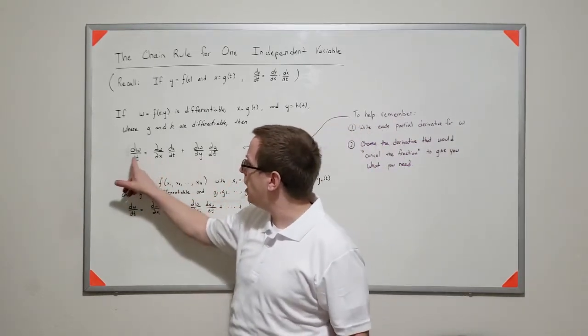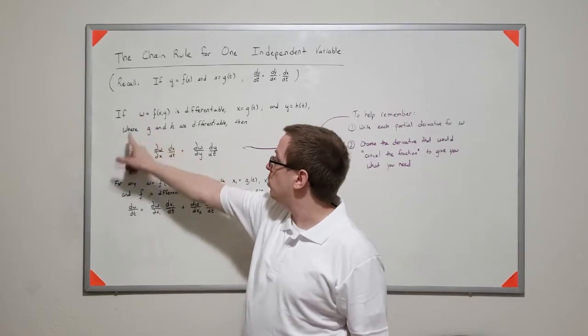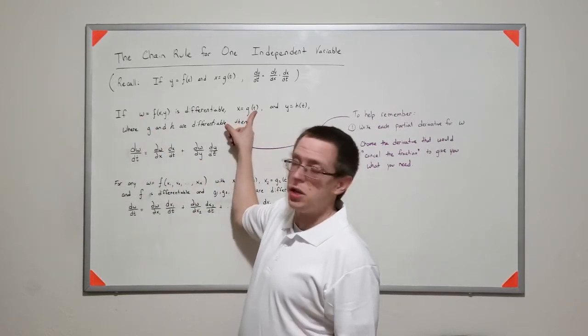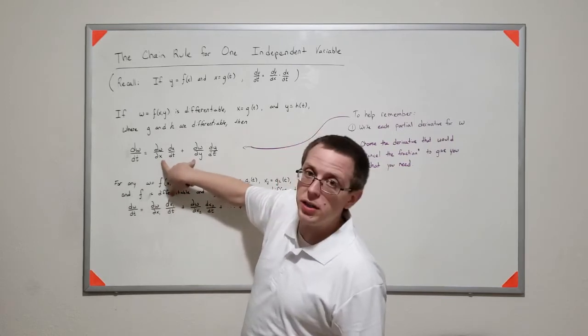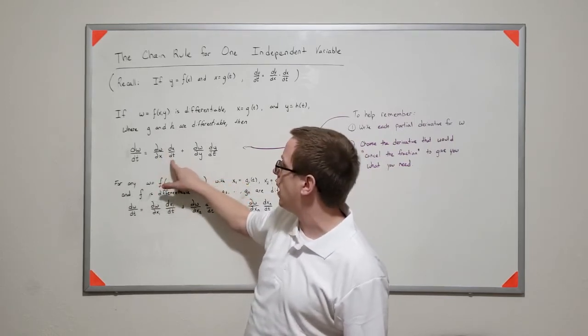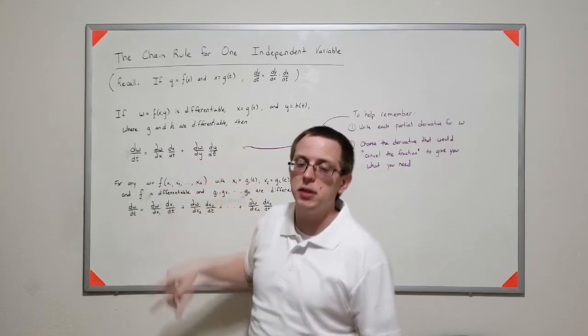Then we can find the derivative of w with respect to that parameter t by finding the partial derivatives with respect to x and y, and multiplying them by the standard derivatives with respect to t.